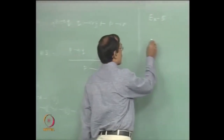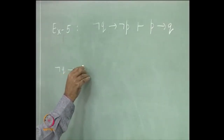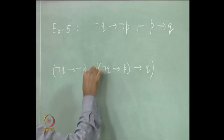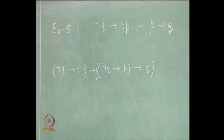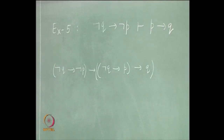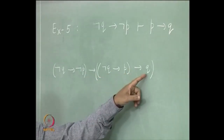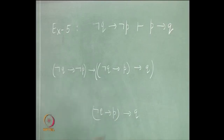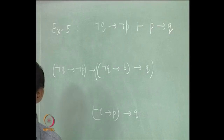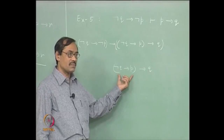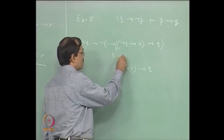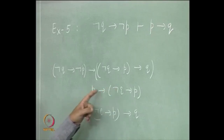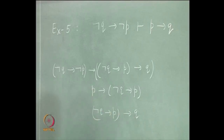Suppose I start from axiom 3. I have: not q implies not p implies (not q implies p) implies q. So I will get not q implies p implies q. Suppose I have got it: not q implies p implies q. But I want p implies q and I want to use HS. So can I say p implies (not q implies p) as another missing premise here? If I take p implies not q implies p, and use HS, p implies r, r implies q, therefore p implies q will follow.